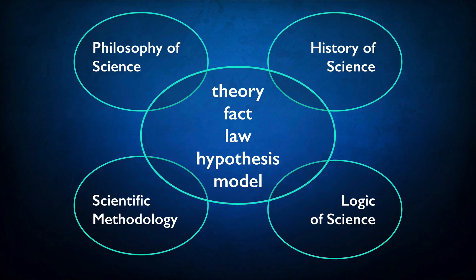These overlaps are inevitable because to properly explain how scientists use terms like theory, fact, law, hypothesis, and model, you need to understand what function these concepts serve in scientific reasoning, what work they do for us in our reasoning about the world. And that is inevitably going to push us into these other areas.